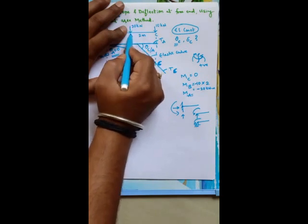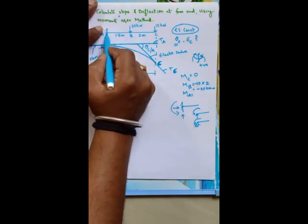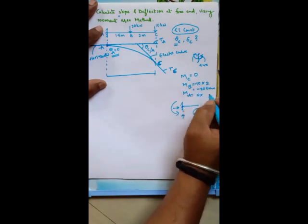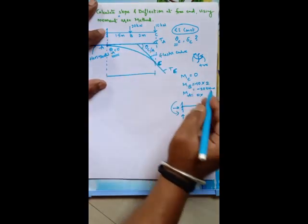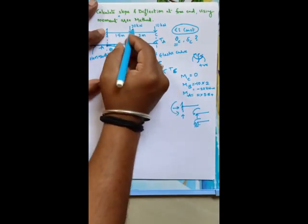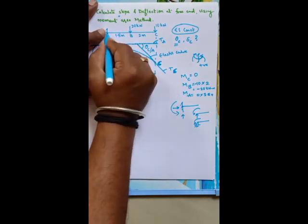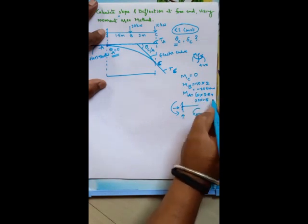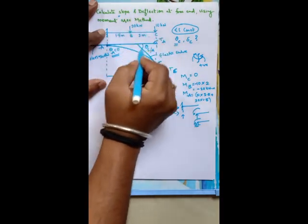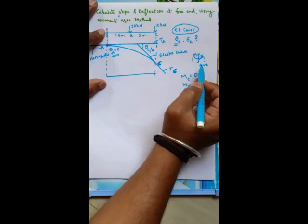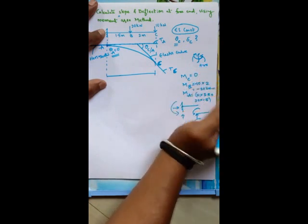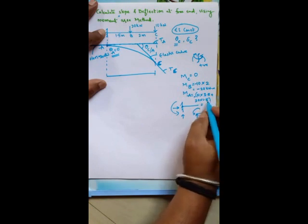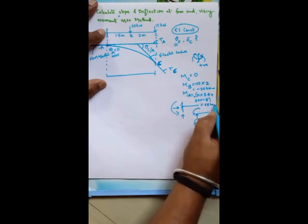At point B, the additional 20 kN load also contributes zero moment right at B (no distance). At point A, the moment from both loads: 10 × 3.5 plus 20 × 1.5. Both moments are clockwise, hence negative by sign convention. Simplifying gives −65 kN·m at A.